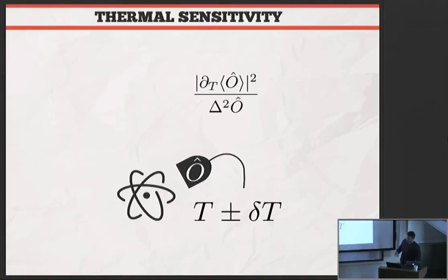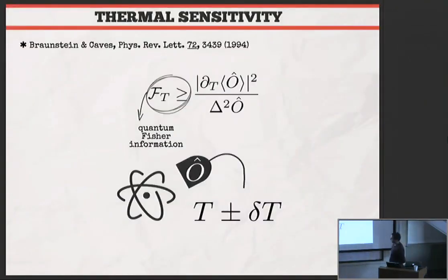What would be the properties of a good temperature probe? You are measuring some observables to work out the estimate of the temperature. You would like the average of this observable to change with temperature. You want it to change a lot, but you also want the distribution to be narrow, because you want to use the distribution for this observable as a temperature gauge. This is something I will call thermal sensitivity, and it turns out this is tightly upper bounded by the quantum Fisher information.